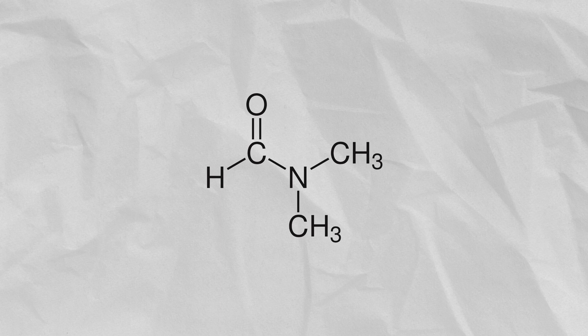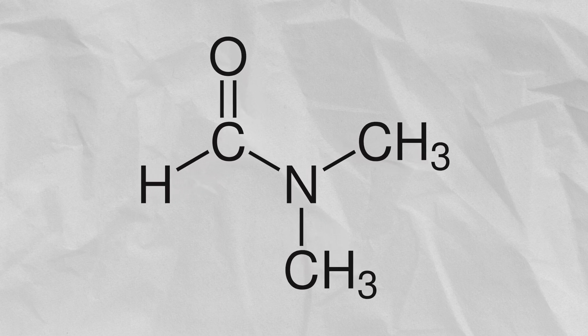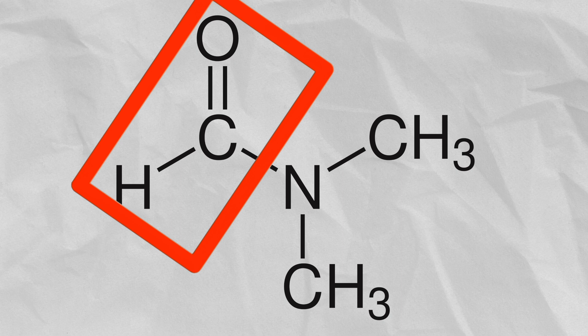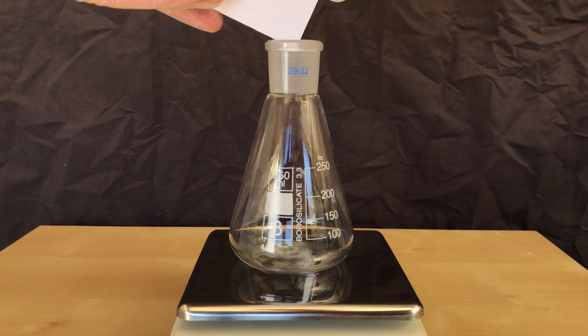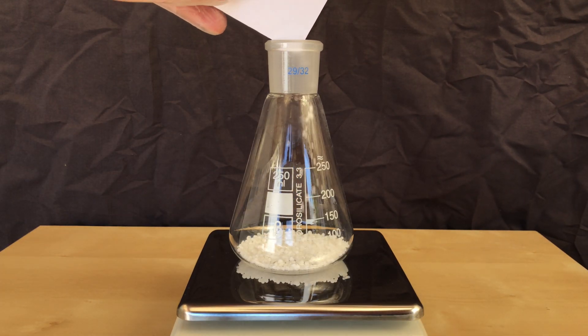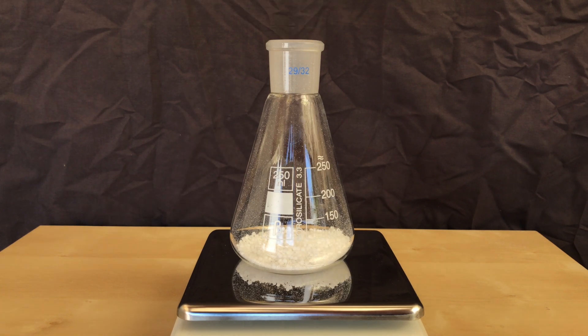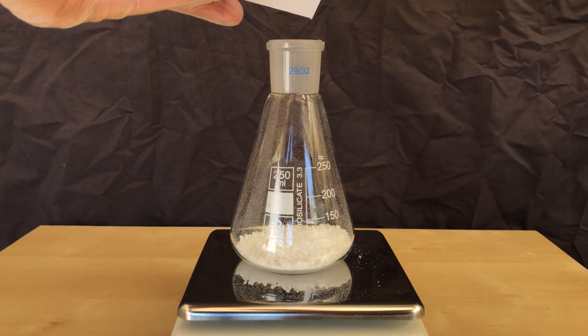DMF is also known as dimethylformamide. Using some chemical magic, it's possible to split it into formate and dimethylamine. I put on some gloves and now I'm ready to begin. A little more than 40 grams of sodium hydroxide, 45 grams to be precise, were weighed out.